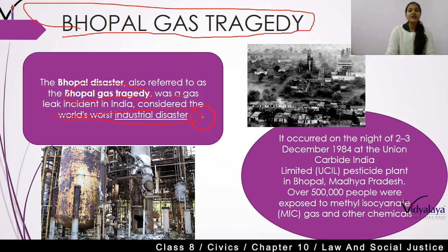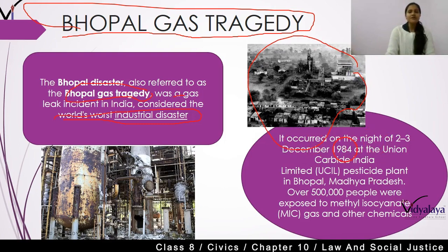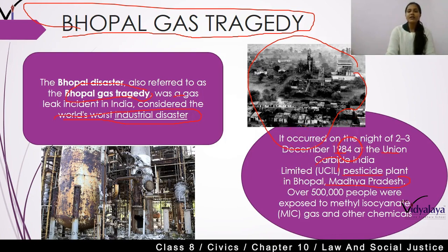We are learning what this tragedy was, when it happened, and what the repercussions were — the problems faced by the residents of Bhopal and the workers in that industry. It occurred on the night of 2nd and 3rd December 1984, at the Union Carbide India Limited — that is UCIL — an industry established in Bhopal, Madhya Pradesh. You can also locate Bhopal on the map. The name Union Carbide India Limited is very important to remember. It was a pesticide plant set up in Bhopal by a foreign company.